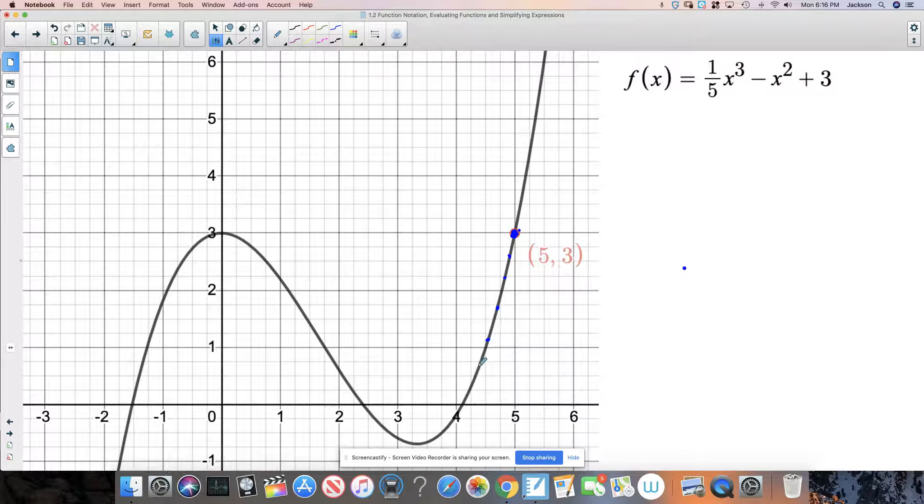Or black curve, I should say. Every single one of these points has an X and a Y coordinate. And every X and Y coordinate is the result of this function right here.